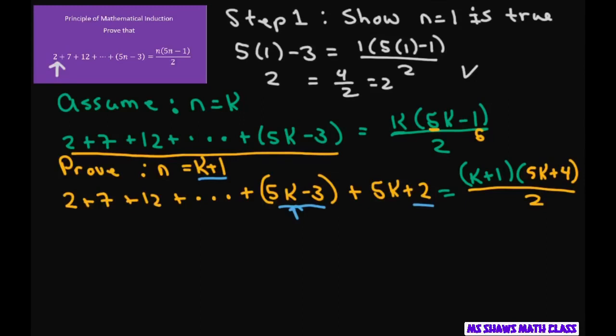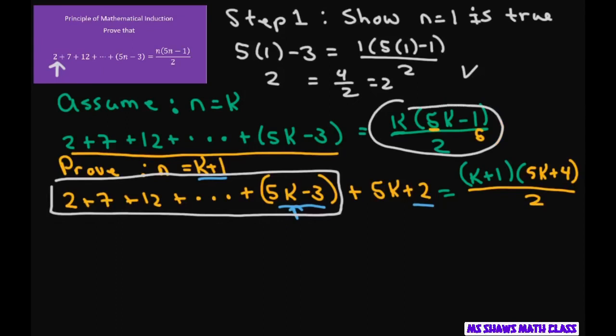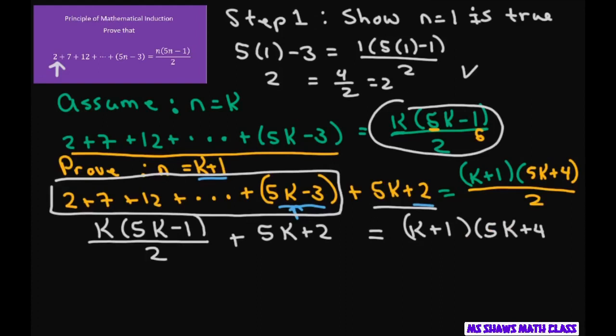Or you can do what we did before and get that. So what we want is to prove that the left-hand side matches the right-hand side. Now, we already know what this part equals. This part equals this. So this is k times 5k minus 1 divided by 2. Now add our new term, 5k plus 2 equals k plus 1 times 5k plus 4 divided by 2.